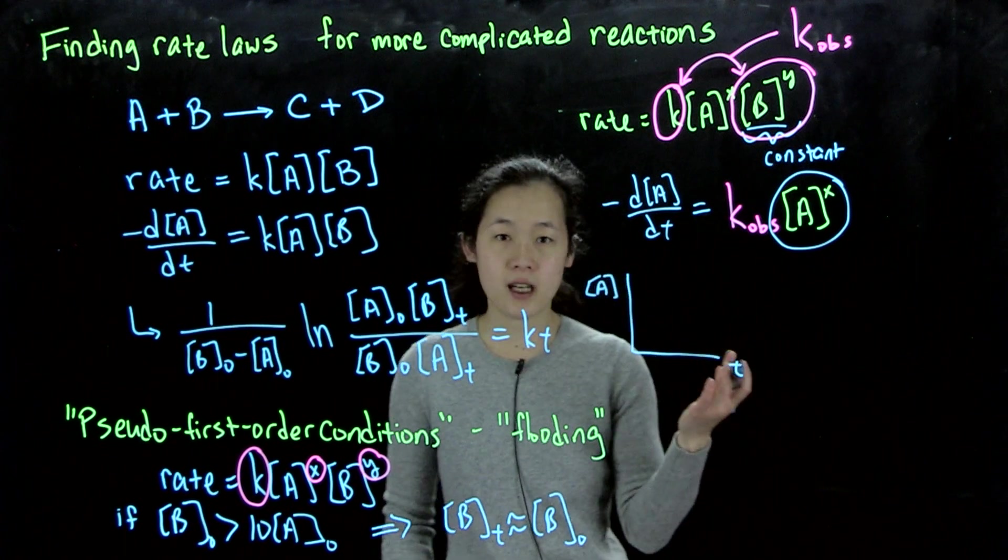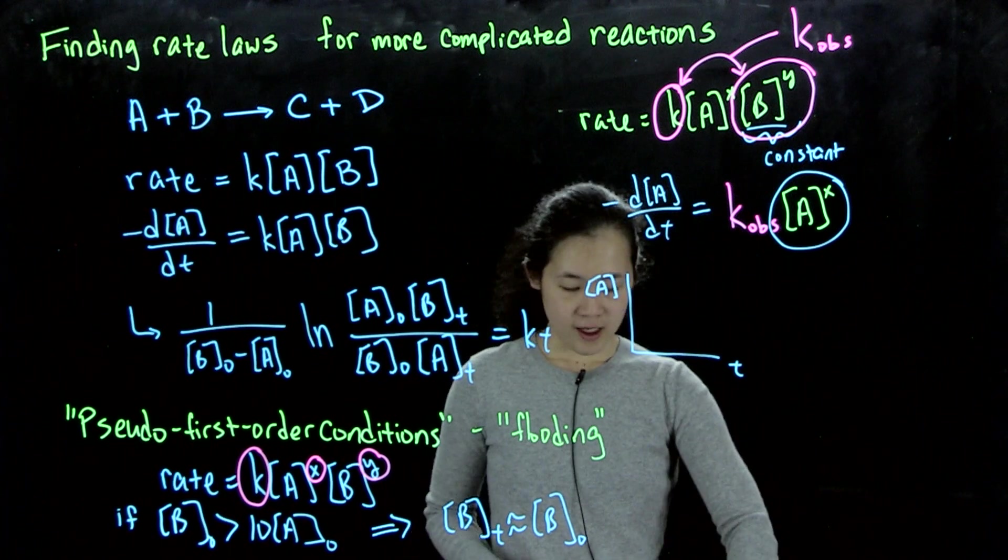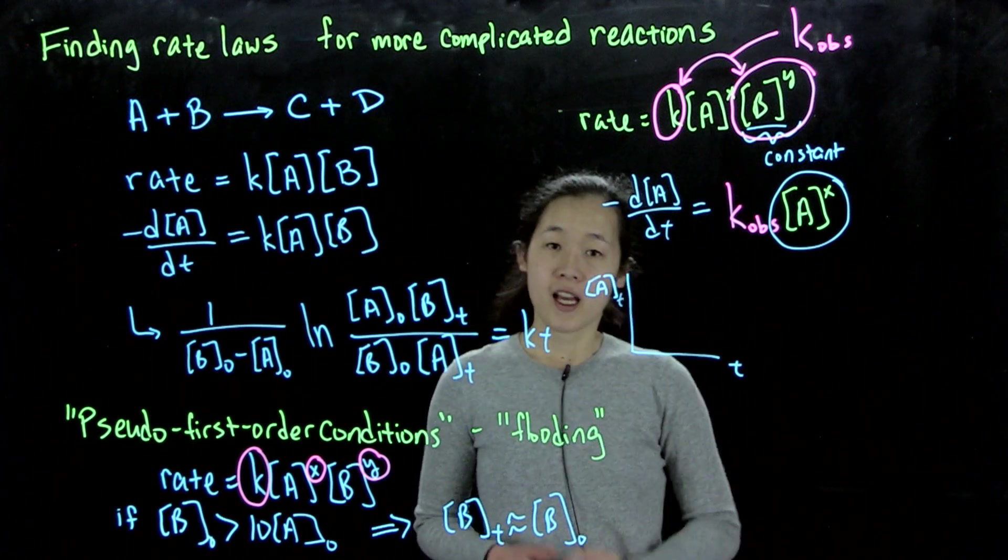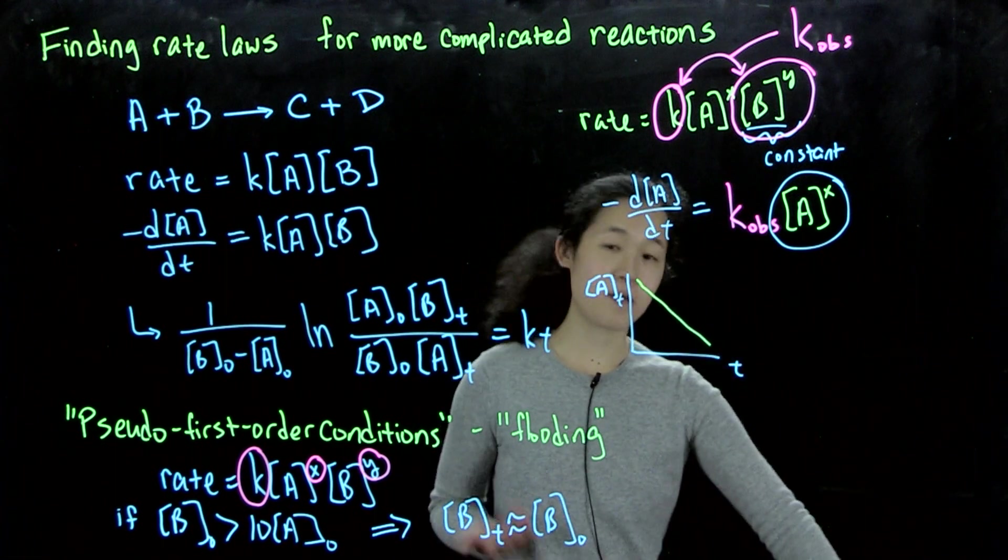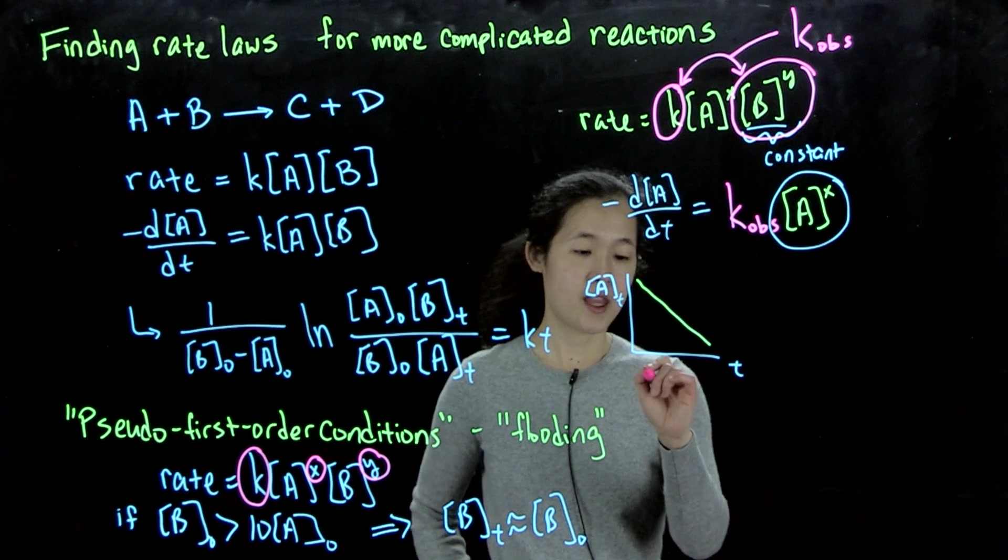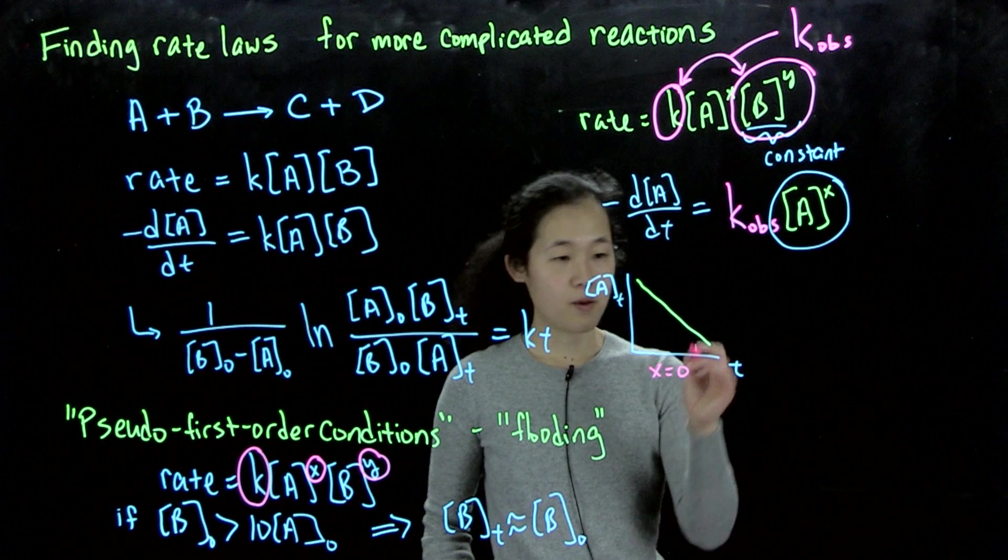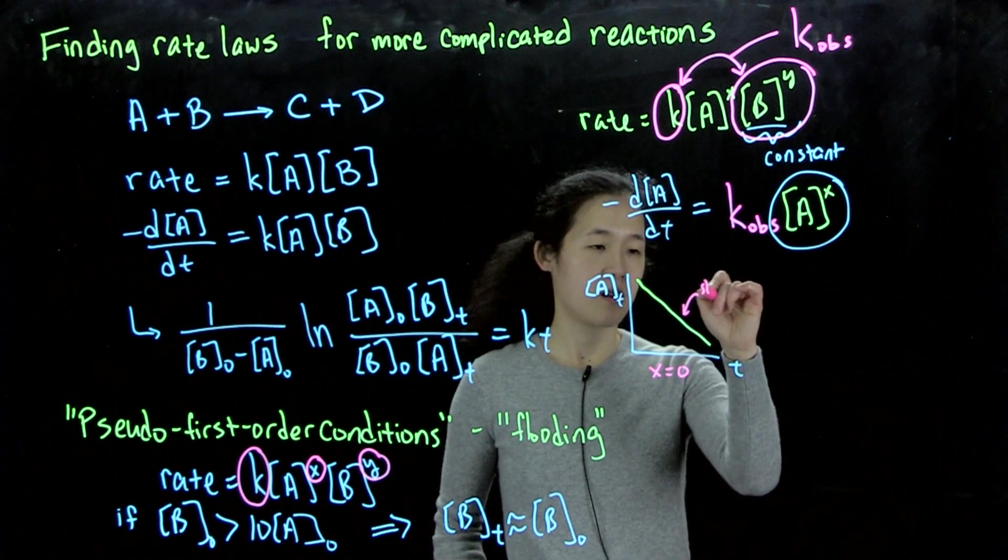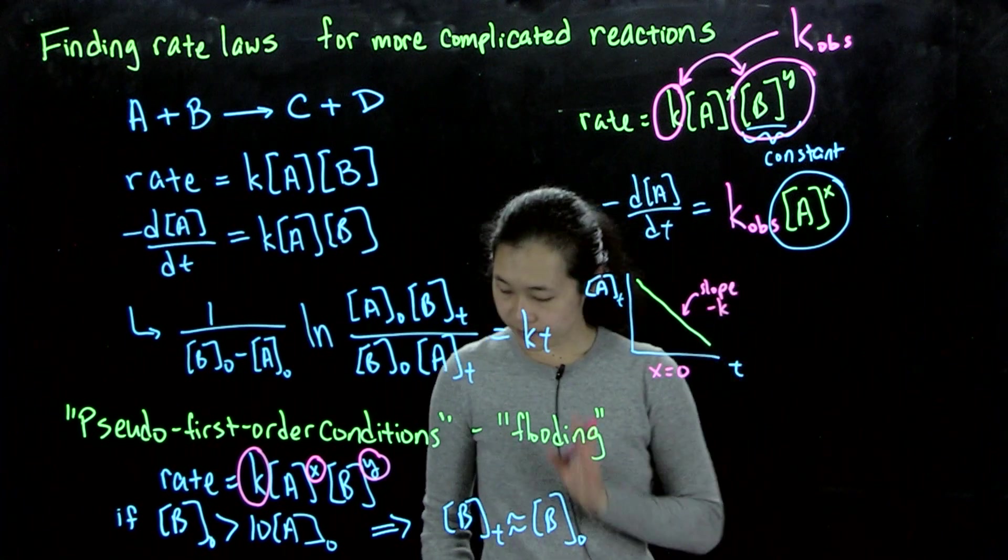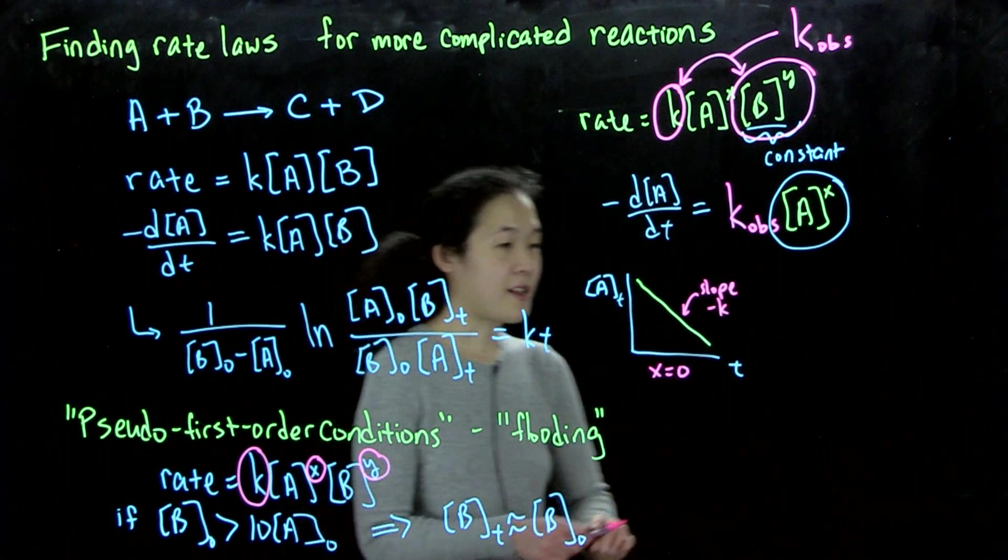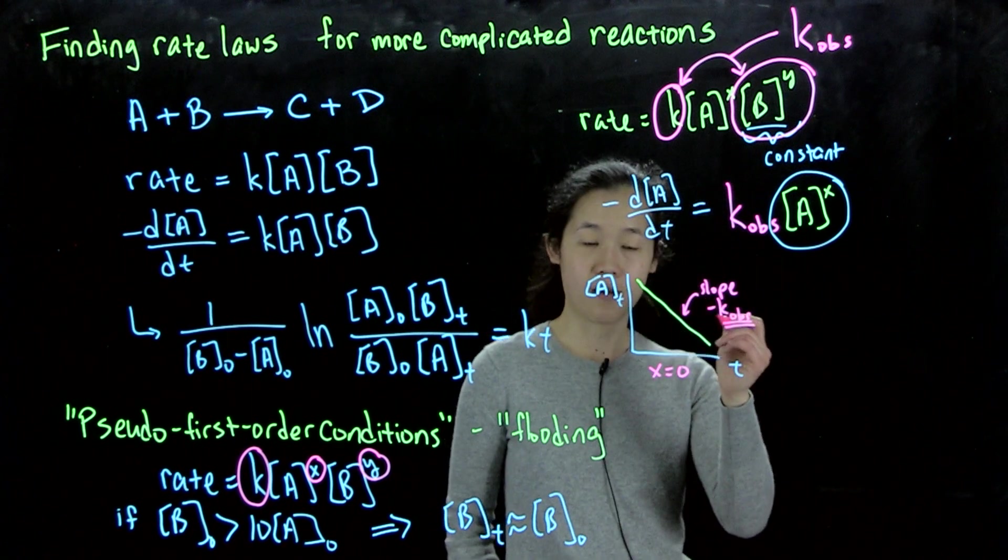One scenario could be the concentration of A times T. If this is linear, then obviously, just from the equation that we talked about last time, this therefore means x equals zero, this is a zero-order reaction, and then this slope is going to be equal to negative k_obs, because we're under a new thing. So this is how we derive k_obs.